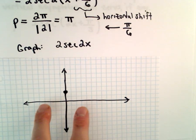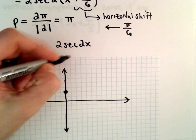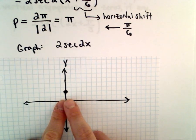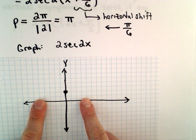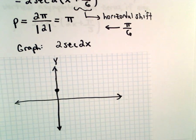Now, normally, for secant, to get the asymptotes nearest the y-axis, we go over to pi over 2, and then to the left we go to negative pi over 2. But that's when the function has a period of 2 pi.